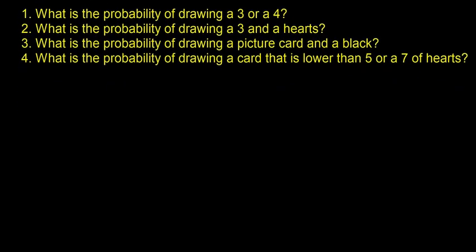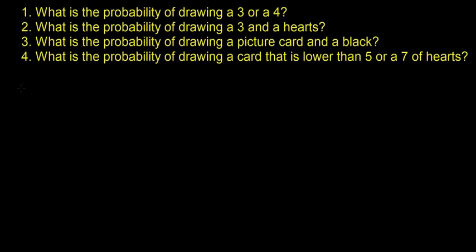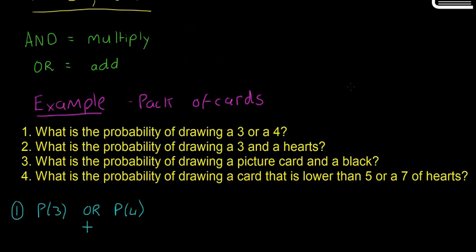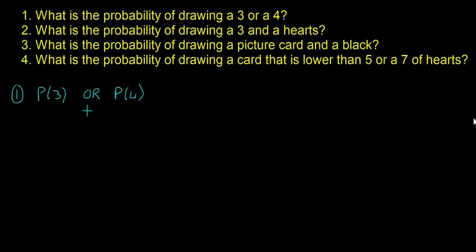I will scroll down just so we can still see them. So the first one. The probability of a 3 or the probability of a 4. If you want to get the probability of getting a 3 or a 4, you say it's the probability of getting a 3 or probability of getting a 4, and you add them. Remember OR means add and AND means multiply as I have up here.